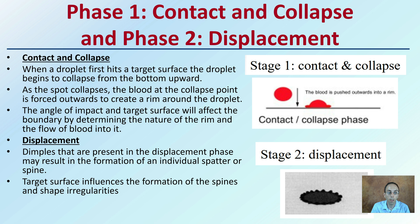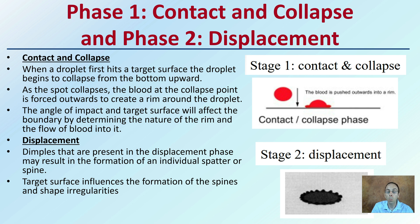In the displacement phase, dimples are present and may result in the formation of individual spatter or a spine that could develop. We can see those spines developing here. The target surface influences the formation of the spines and shape irregularities. If it's a very smooth surface, you might get a really well-defined displacement phase, whereas a very porous surface might make it harder to see that level of detail.